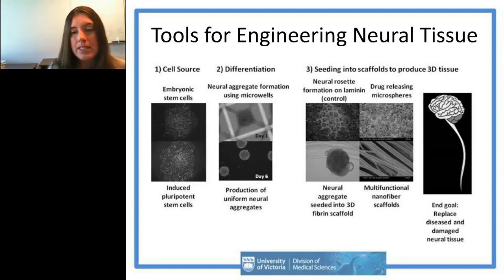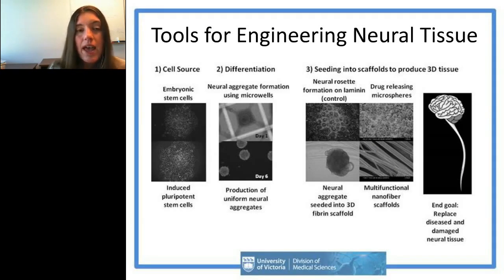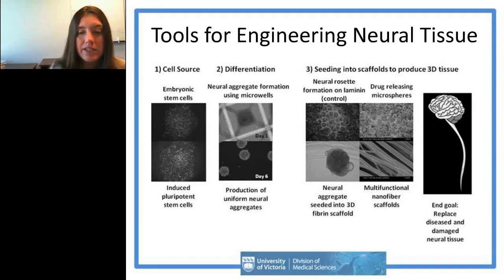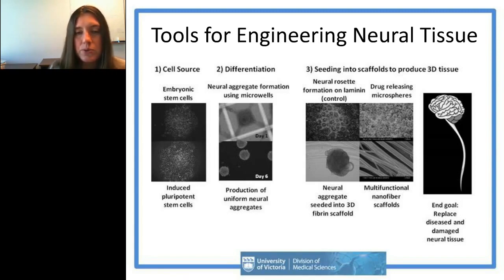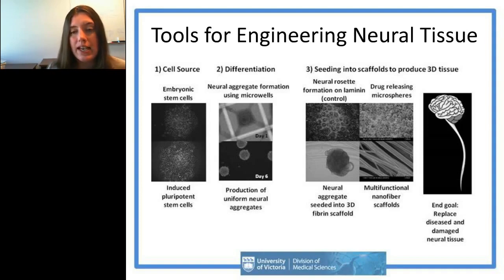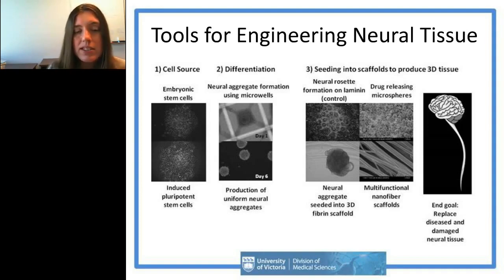Where my group comes in is that with these cell studies you're often just directly injecting cells into an injury site or lesion, and it's not a good environment for cells to grow in. We try to provide a better environment through the use of 3D scaffolds as well as drug-releasing scaffolds that can help control the behavior of these transplanted cells. Here's a general overview of our tools for engineering neural tissue.